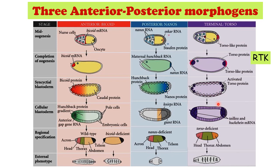Tailless and hunchback pin help in formation of acron on the anterior end and telson on the posterior end of Drosophila. In comparison to the wild type, which forms acron, head, thorax, abdomen, and telson segments, a torso-deficient Drosophila forms only head, thorax, and abdominal segments. Also note that Drosophila deficient in the bicoid gene do not form acron on the anterior end — in the absence of bicoid, the terminal zygotic genes form telson rather than acron. Apart from knowing which maternal gene helps in anterior, posterior, or terminal segment formation, we should also know at what developmental stage these maternal genes are expressed.